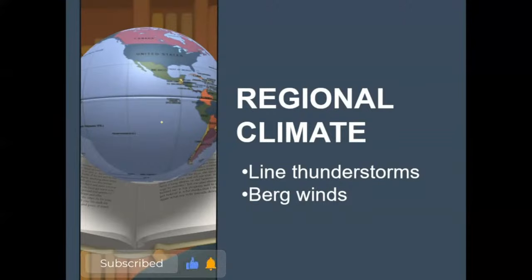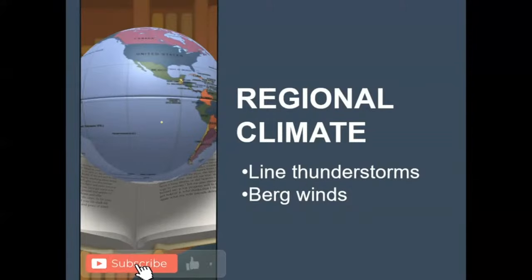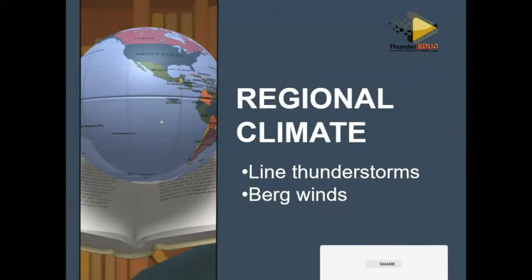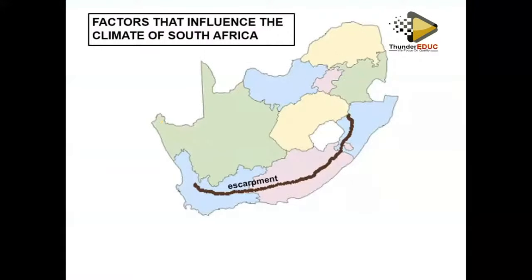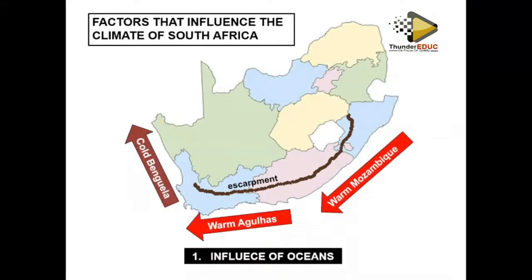We have crossed the tropical cycle and now need to look at regional climate. We need to understand the factors influencing the climate of South Africa. Number one is the influence of oceans, which fall into two categories: we have the warm Mozambique currents and we also have the cold Benguela current.